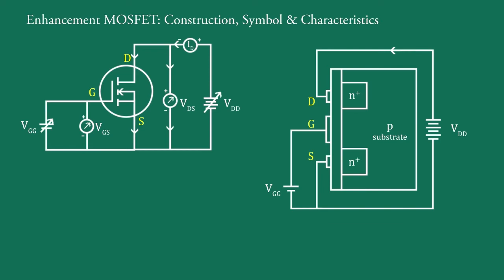The enhancement MOSFET differs from the depletion type MOSFET is that no continuous channel exists between source and drain. Therefore, when VGS is equal to zero, no drain current flows.